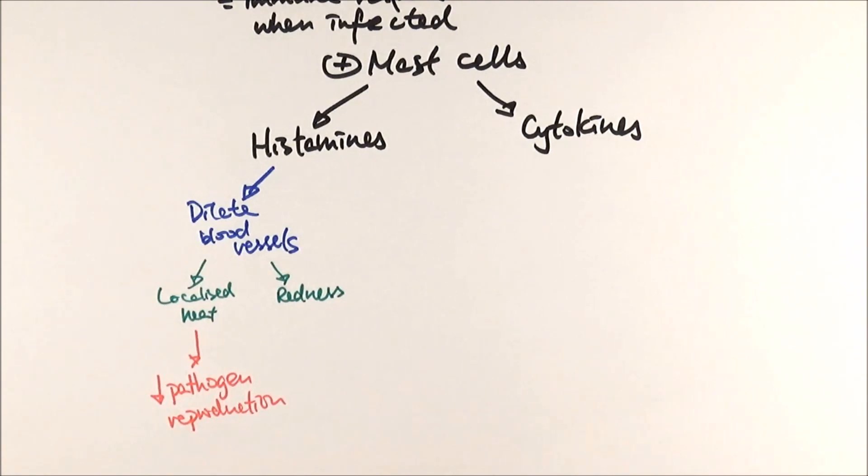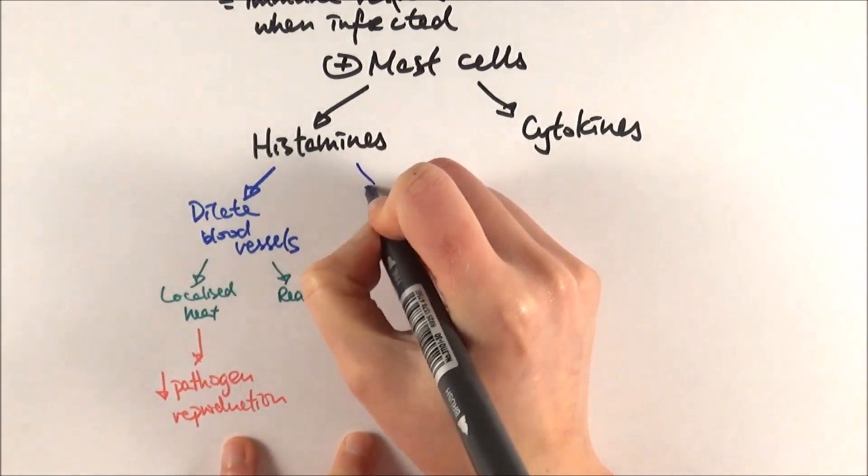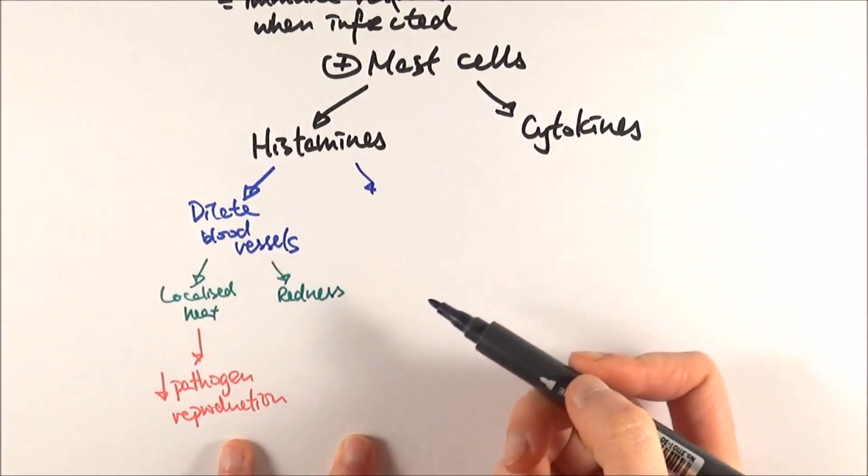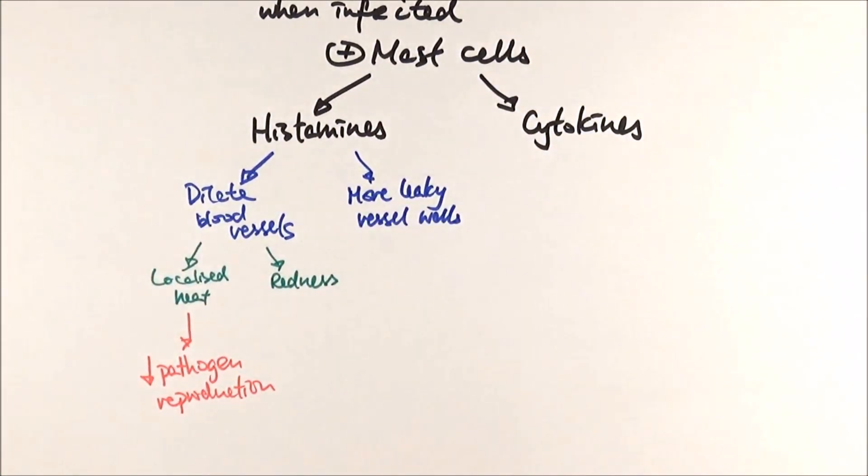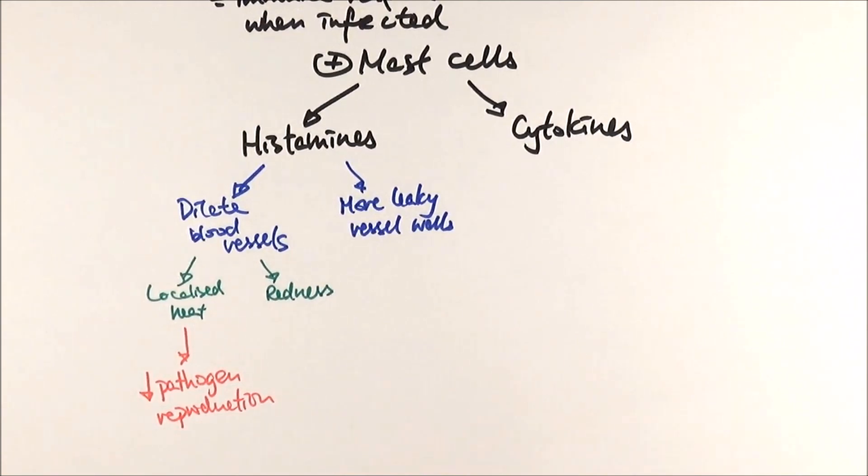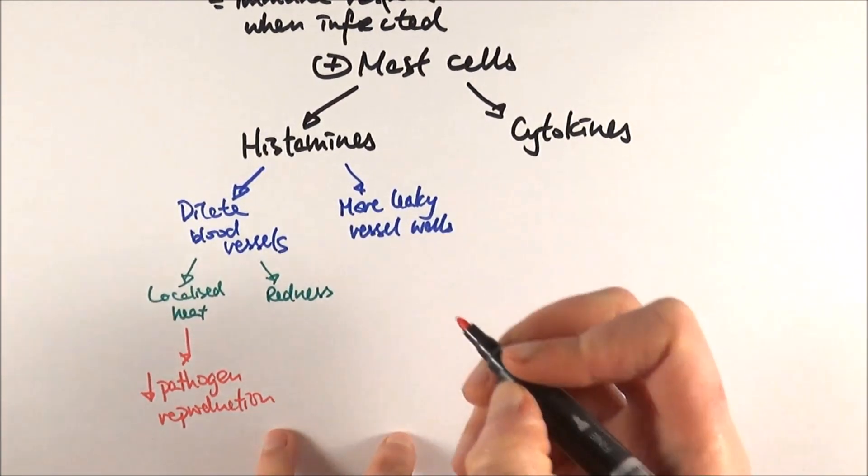Another thing that histamines do is they make the blood vessel wall more leaky or more permeable. If you think back to when you talked about blood and tissue fluid, a more leaky vessel wall means you're making more tissue fluid. You're basically allowing more white blood cells to go through the vessel wall into the tissue fluid to tackle the pathogen directly.